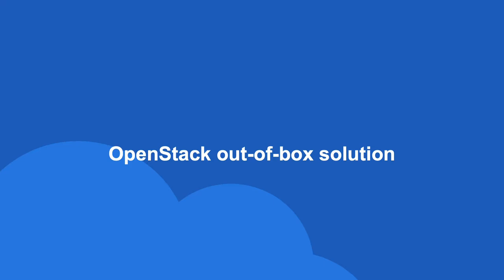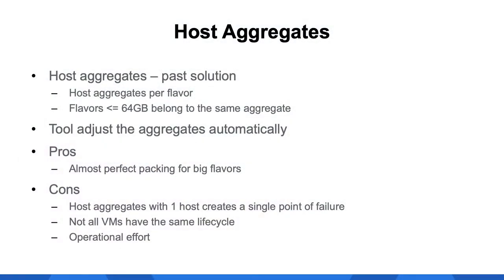Out of the box, OpenStack already provides a solution to deploy different flavors while balancing fragmentation and blast radius — this solution is host aggregates. In Workday, we used the approach of one host aggregate per flavor, except for flavors with memory below or equal to 64 gigabytes, which belong to the same aggregate. We developed a tool to adjust the host aggregates dynamically based on the number of VMs per flavor. Using host aggregates makes it easier to achieve good packing, but there are limits. For example, when a flavor is used for only one project and doesn't require much capacity, all VMs could end up on one or few hosts, increasing the blast radius.